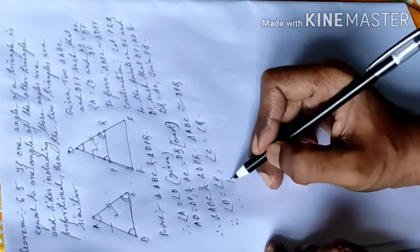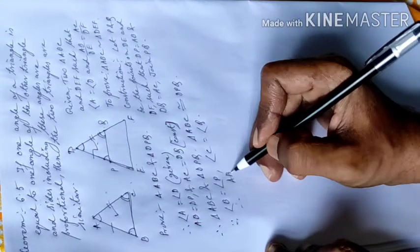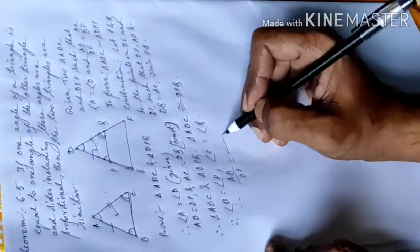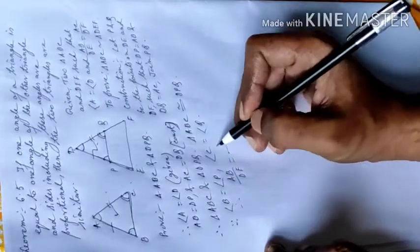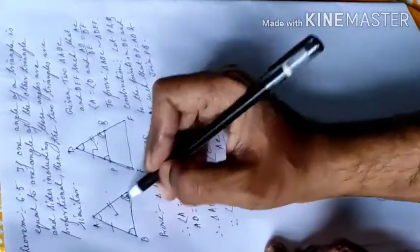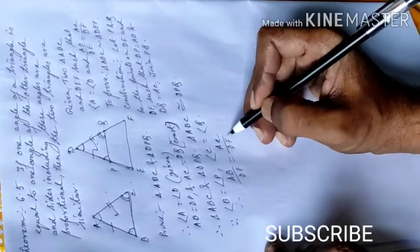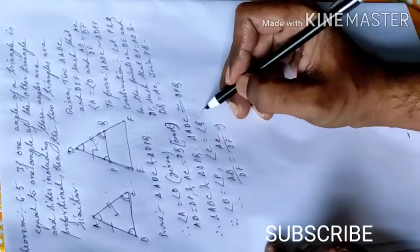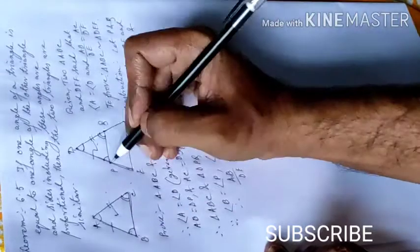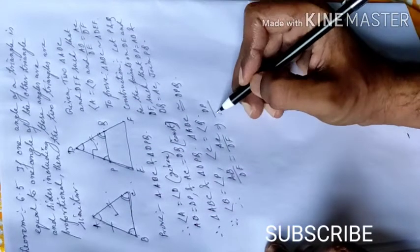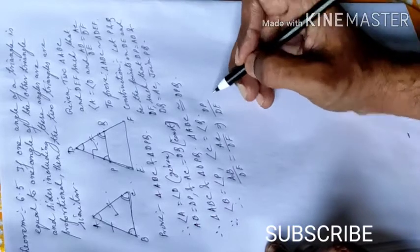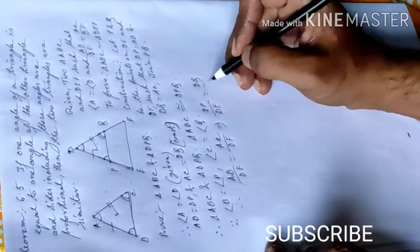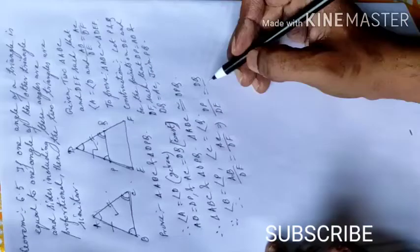AB by DE is equal to AC by DF (given). Since AB is equal to DP, then DP by DE is equal to AC, which is equal to DQ, so DQ by DF.